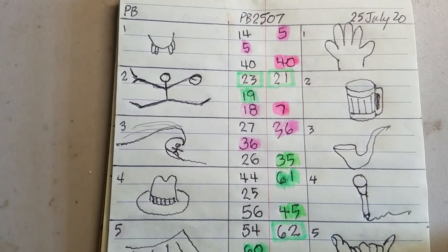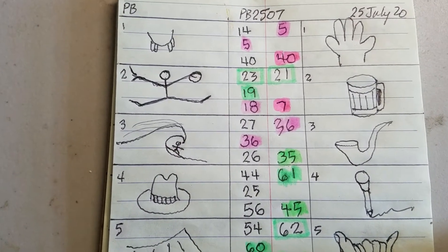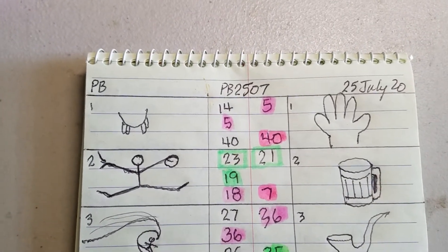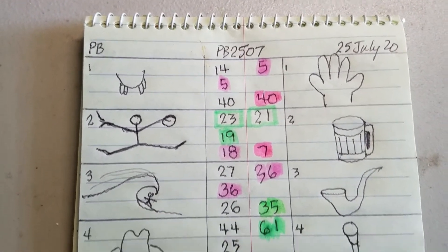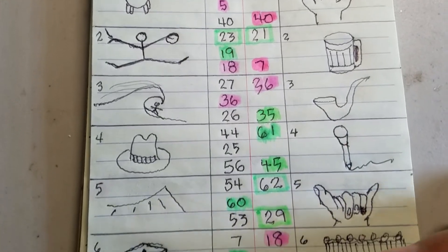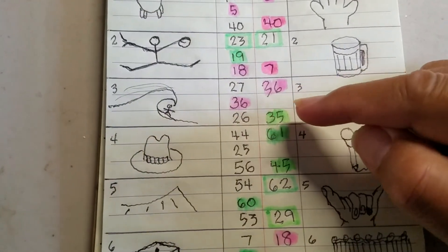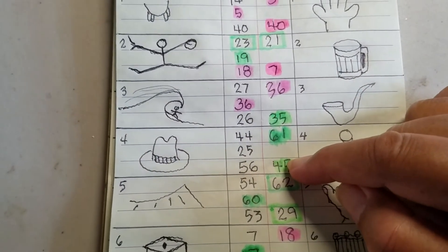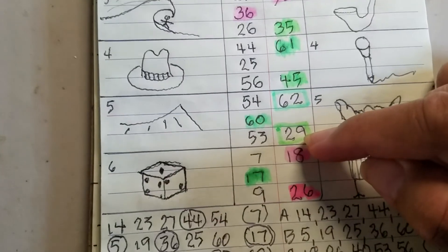So I would have had three numbers that would have hit if I had used the same numbers that I created for the 25th of July. Besides that I would also have two one-offs, 35 and 45, and a two-off, 29.